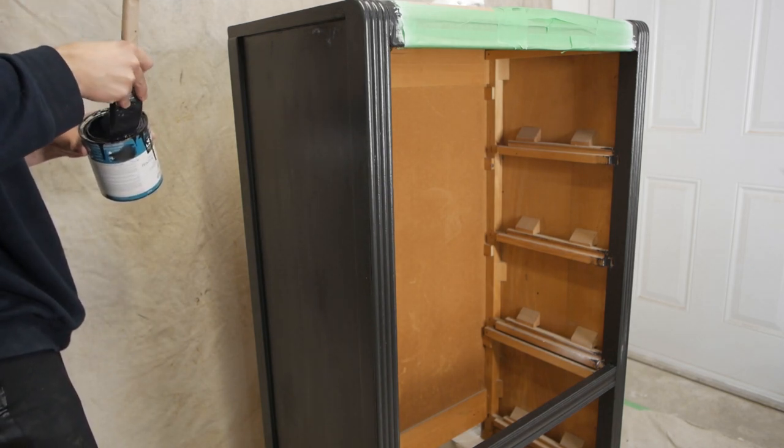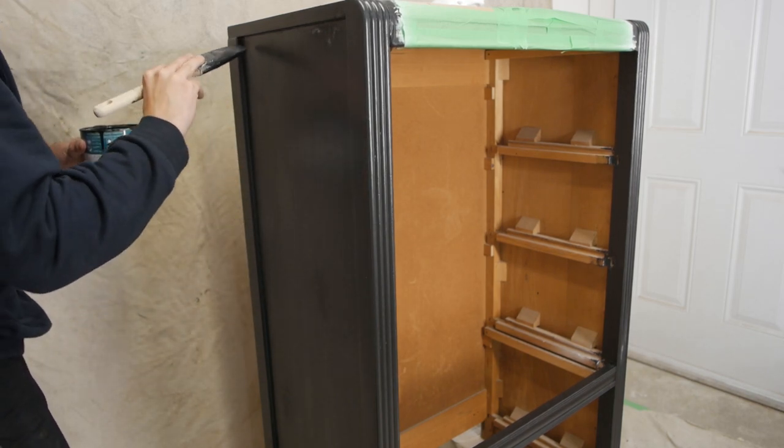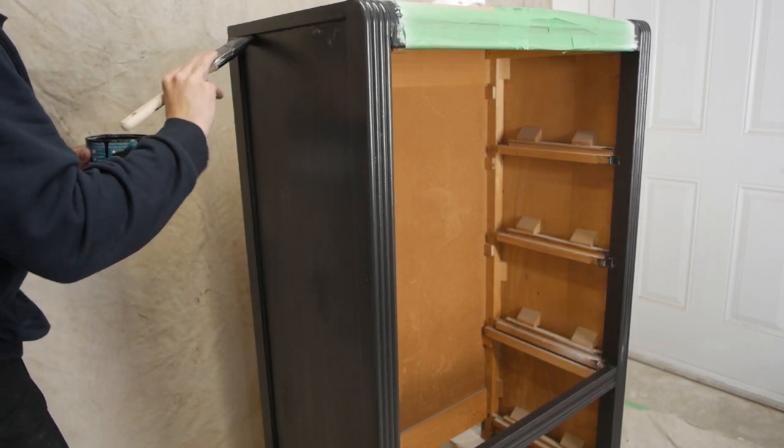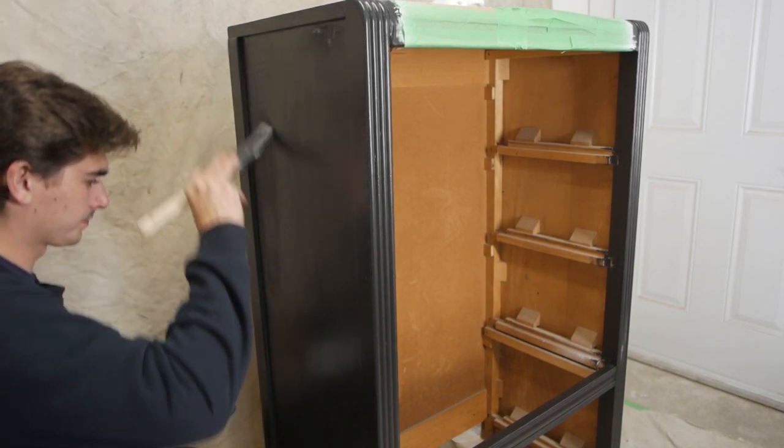Finally, let's throw on the third and final coat of black paint. After this coat, we don't need to sand because we already sanded between each step, so it should be pretty smooth.